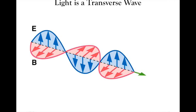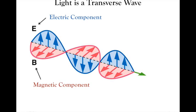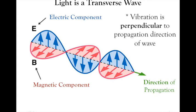Light is one of these two types of waves — it's a transverse wave. The vibration direction is up and down, perpendicular to the propagation direction. The three main components are: an electric component E (blue arrows), a magnetic component B (pink arrows), and the propagation direction (green arrows). The electric and magnetic components are perpendicular to one another at 90 degrees, and the propagation direction is perpendicular to both.